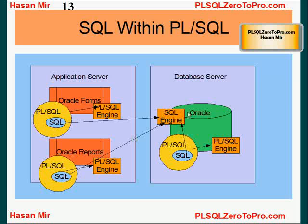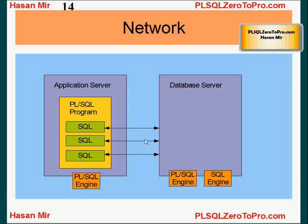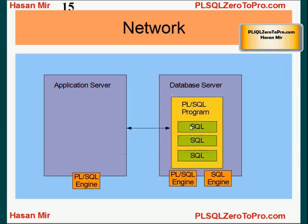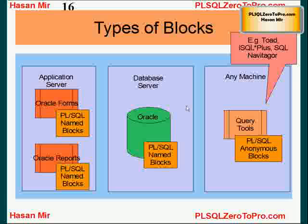A PLSQL program can consist of multiple SQL statements, but the SQL engine only resides on the database side — it is not included in other products. So if you're writing a PLSQL program on the form or report designer level with many SQL statements, each SQL statement must be sent to the database machine, causing a lot of network traffic. For example, with three SQL statements, traffic flows six times. To reduce this, you can copy the whole PLSQL program to the database side — then network traffic flows only twice, since all processing happens on the database.